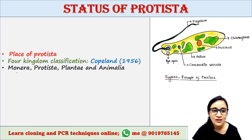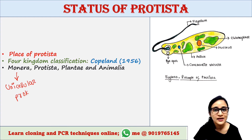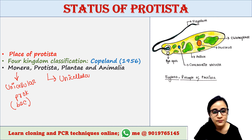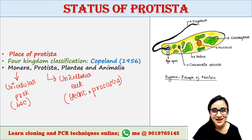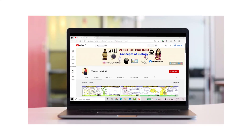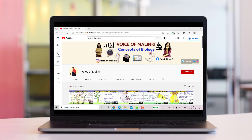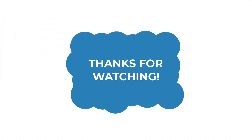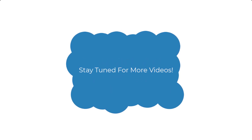So in Monera it was unicellular prokaryotes such as bacteria, and in Protista it was unicellular eukaryotes such as yeast and protozoa. Hence, for the first time he placed prokaryotes and eukaryotes separately. Since then, Protista includes only unicellular eukaryotes.